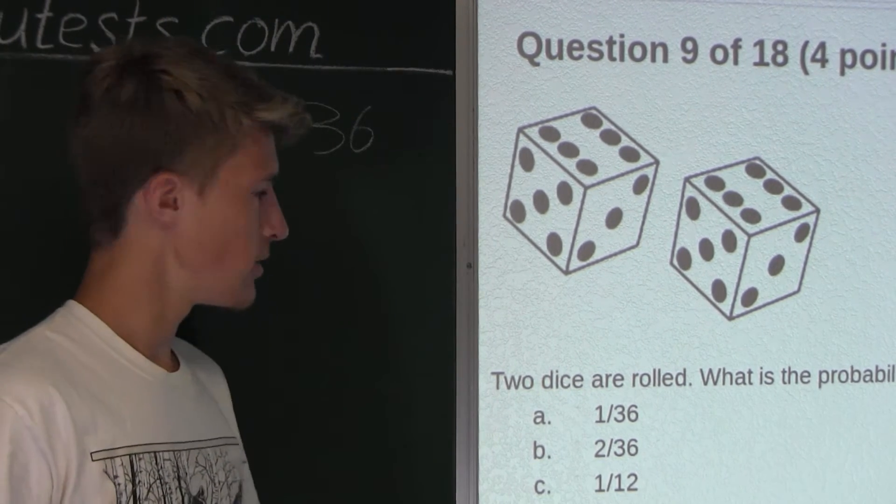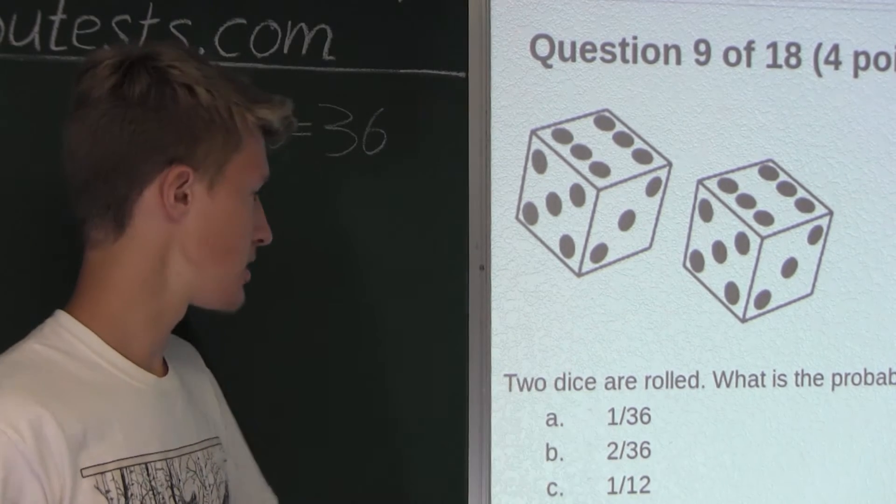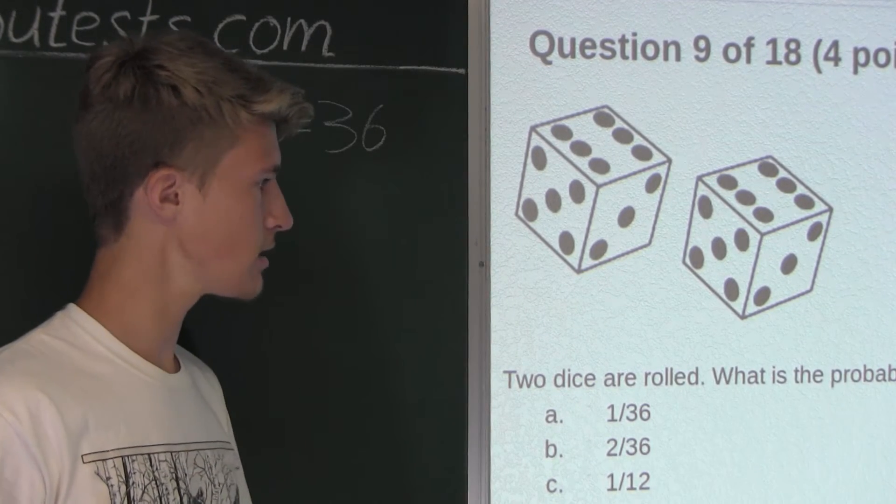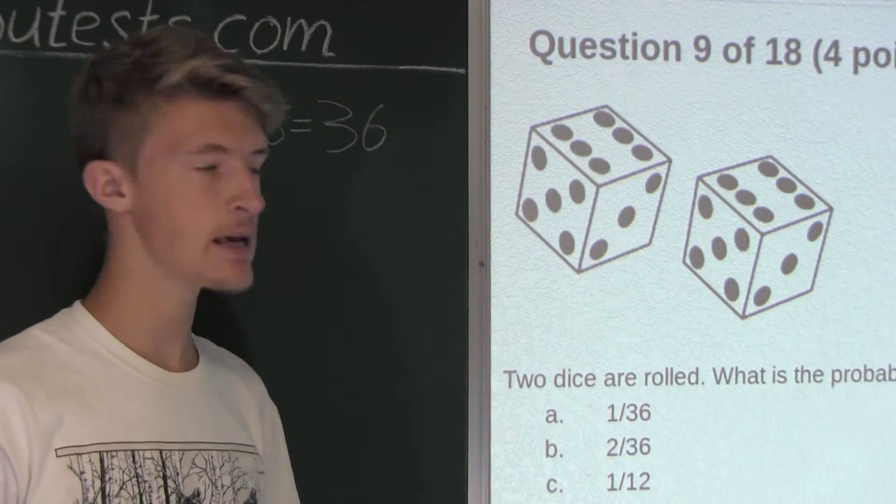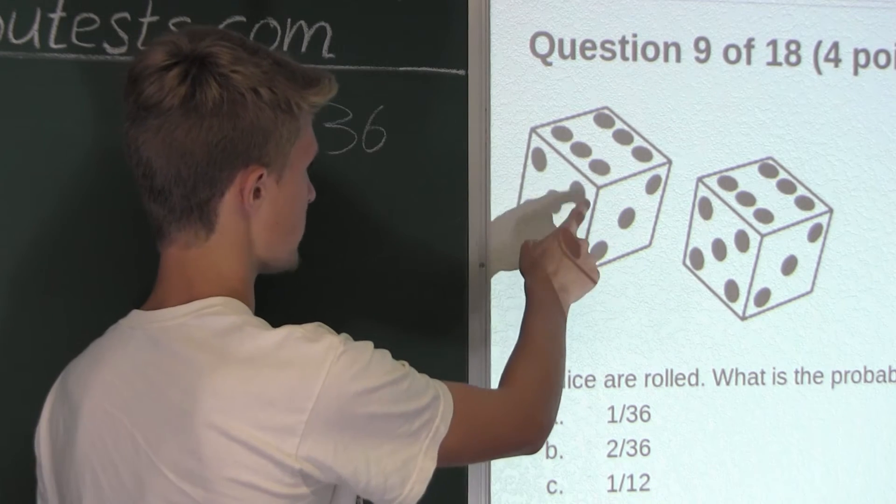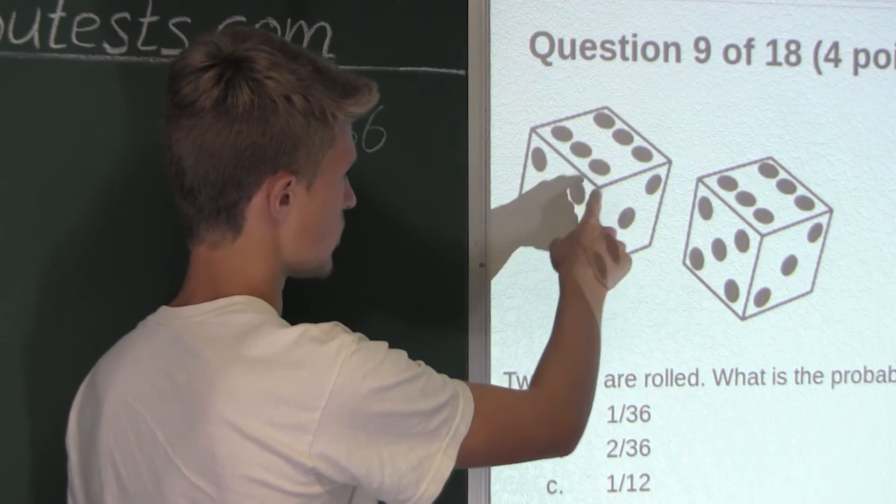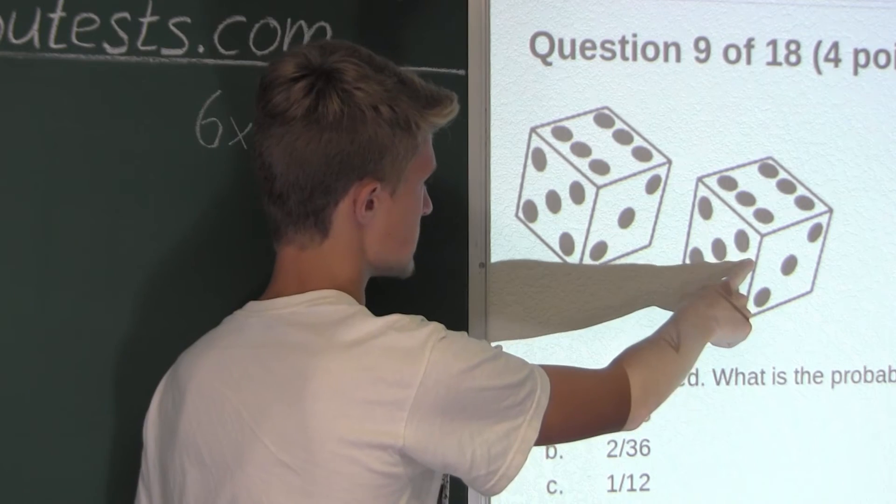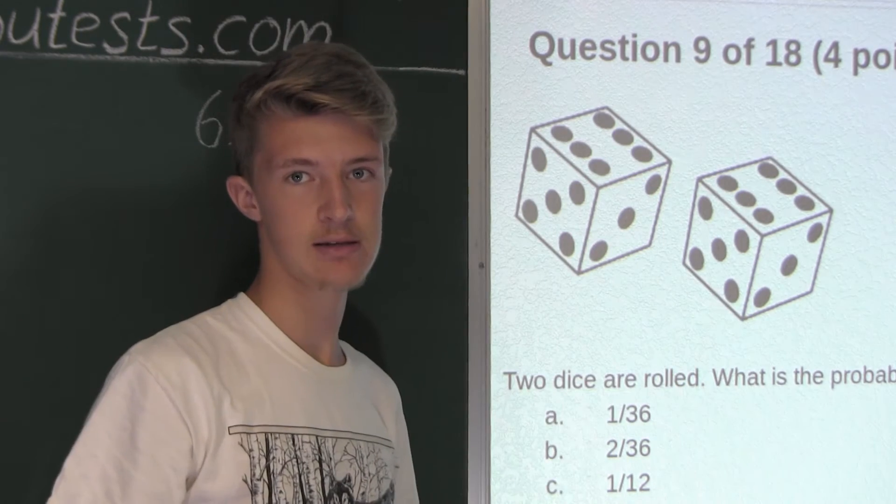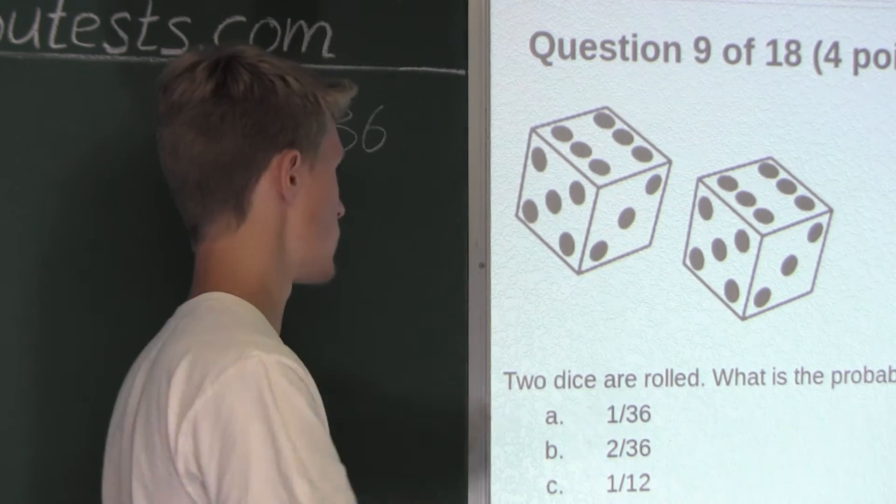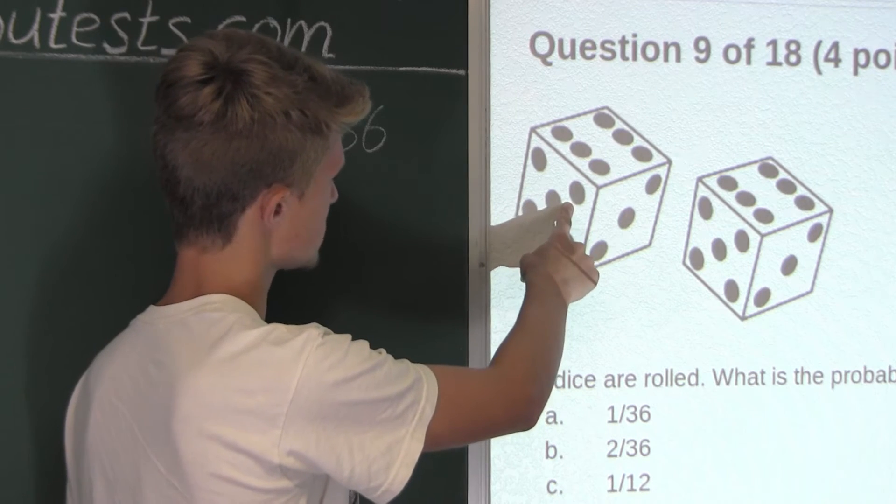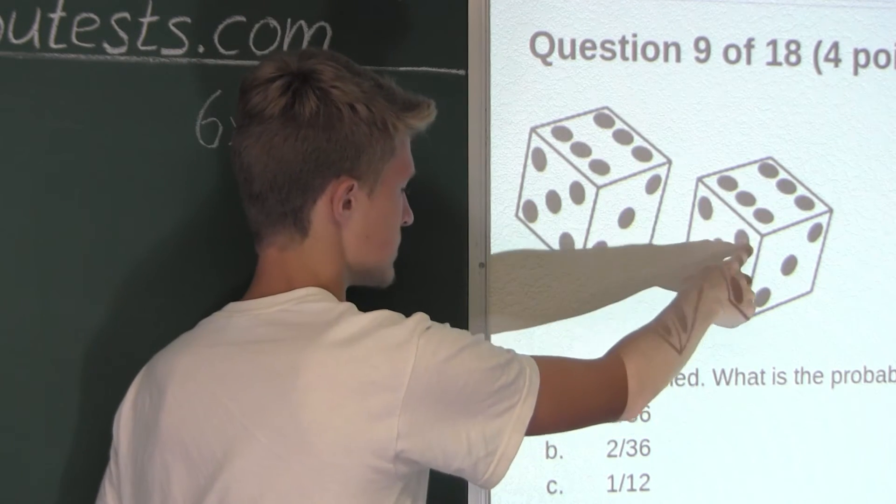Each of these 36 possible outcomes are equally likely. For example, rolling a one on the first die and a four on the second die is equally likely as rolling a six on the first die and a six on the second die.